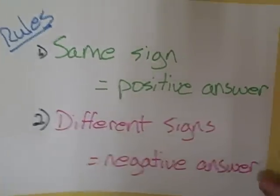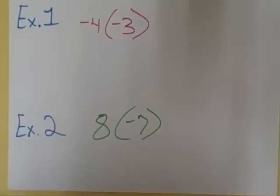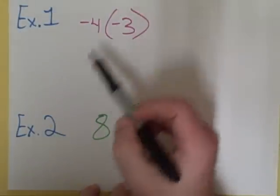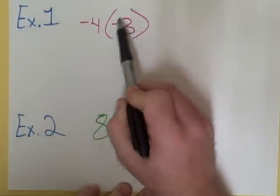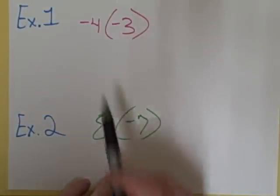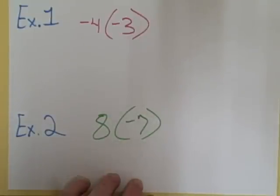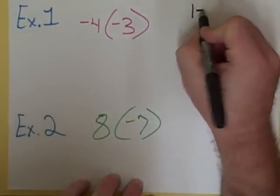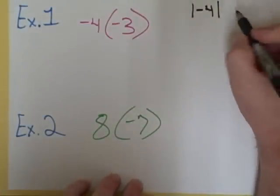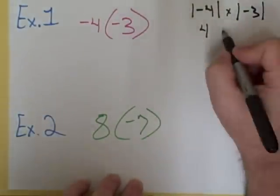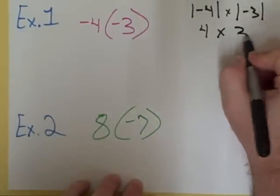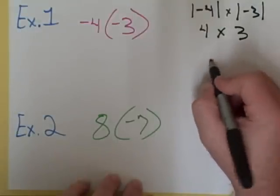Let's go ahead and work through some examples. Example number one: we have a negative four times a negative three. Please understand that these parentheses, when they're right next to a number such as this negative four, it means to multiply. We're multiplying a negative four times a negative three. The first thing we're going to do is multiply the absolute value of negative four, which is four, times the absolute value of negative three, which is three, and four times three is 12.